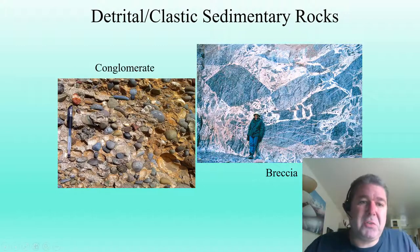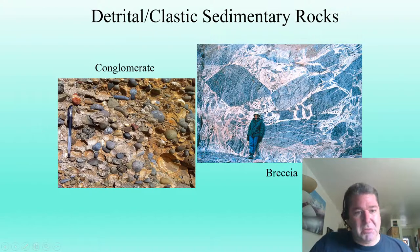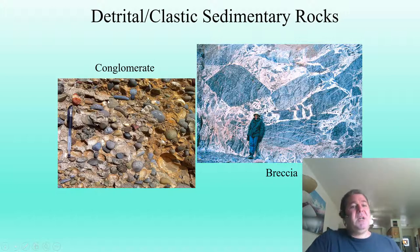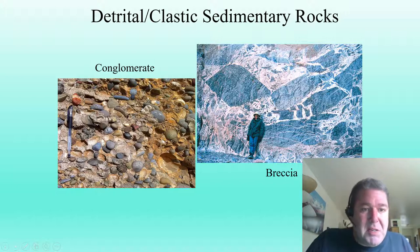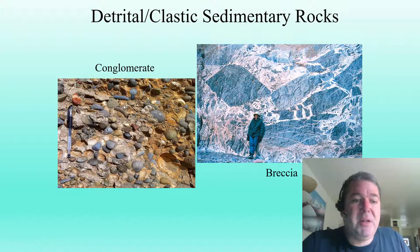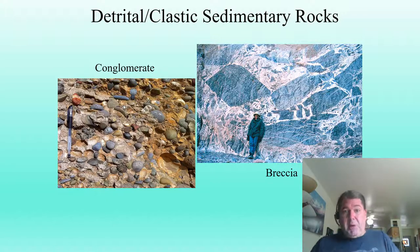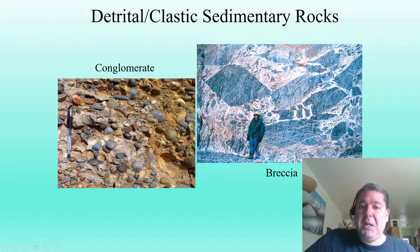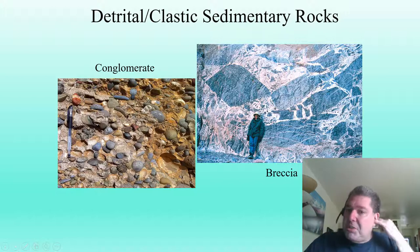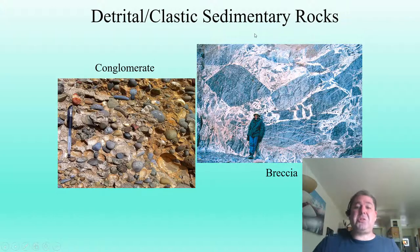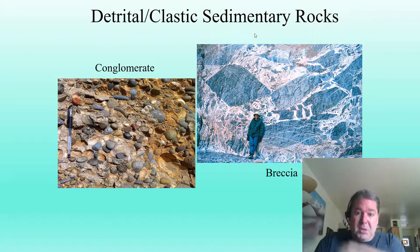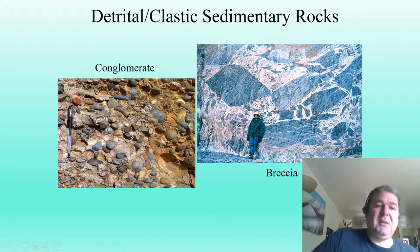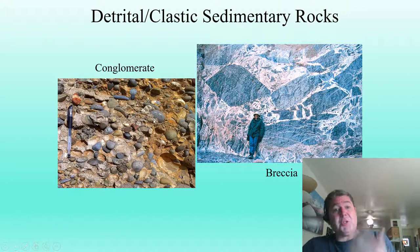In the gravel size, we have conglomerates, which usually show some rounding of the pebbles or grains inside. This rounding indicates they've been tumbled and traveled some distance, with sharp edges knocked off. This shows some distance of transport. The difference between a conglomerate and a breccia is that breccia has very angular blocks — this is actually a fault breccia — showing it probably hasn't traveled very far from its original location. It broke off, fell in place, and was relithified. This hints at both distance of transport and energy.